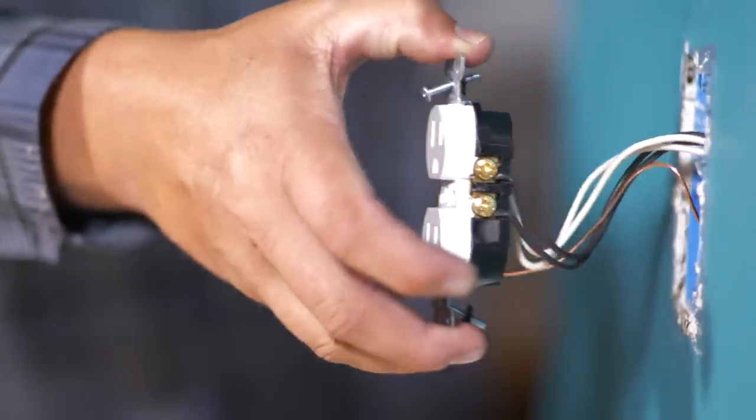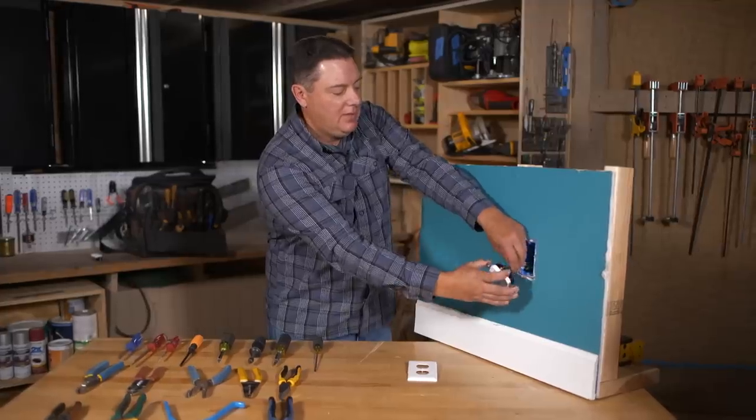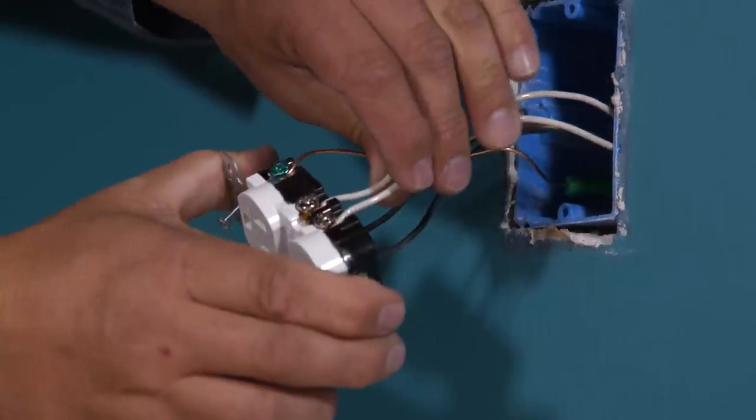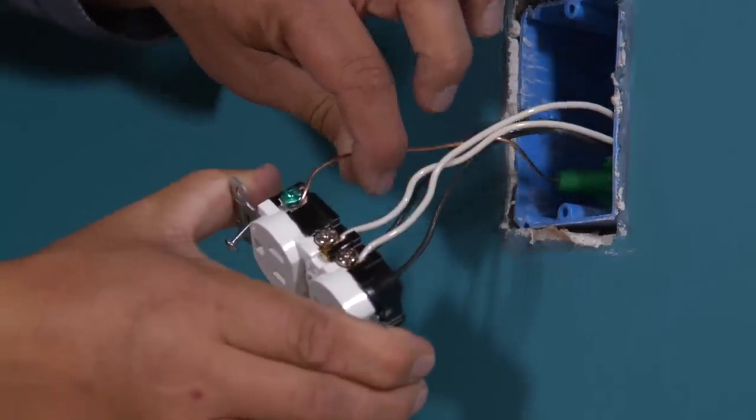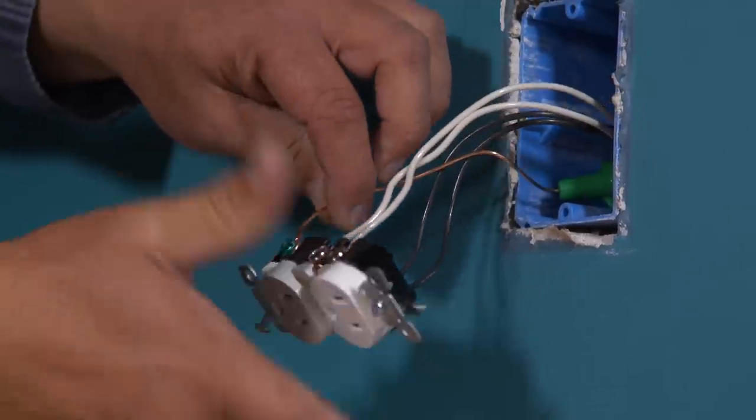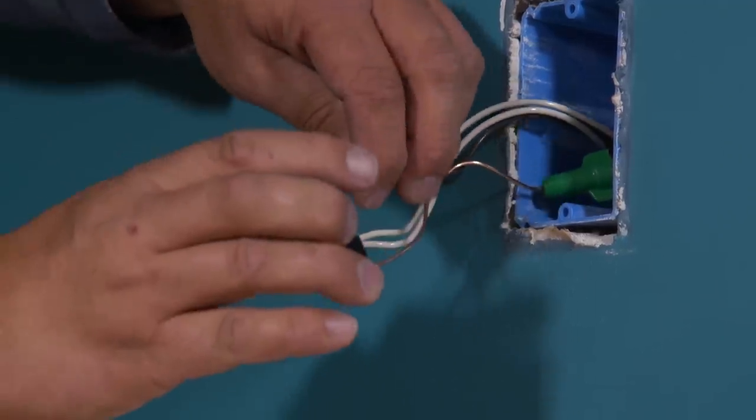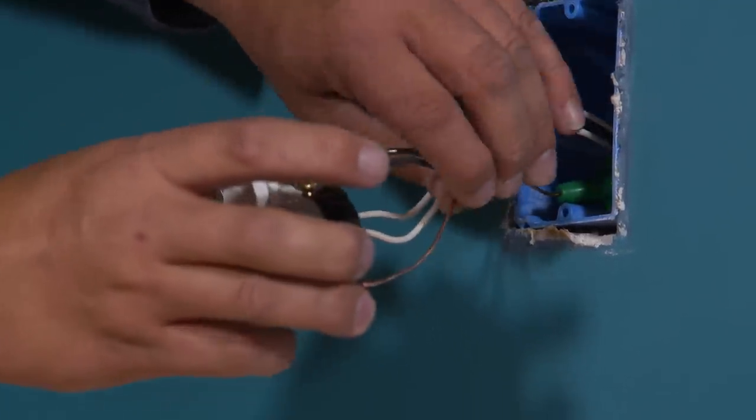So now we can take the device out, and we can see we have our black wires on the brass screws, that's our hot, our white wires on the silver screw, that's our neutral, and our bare ground wire on the green screw, that's our ground. Now you can see on this, the wires are really fairly short and they're a bit difficult to work with.